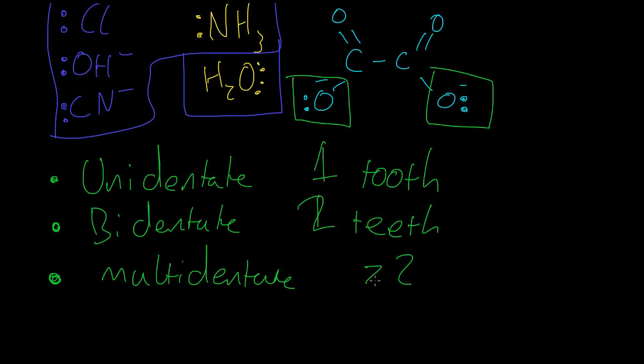And then you can have very crazy things like, we'll look later at something called EDTA4-. That's a multidentate ligand, which I think can form four coordinate bonds. No, six coordinate bonds that can form. So that's how we separate these ligands.